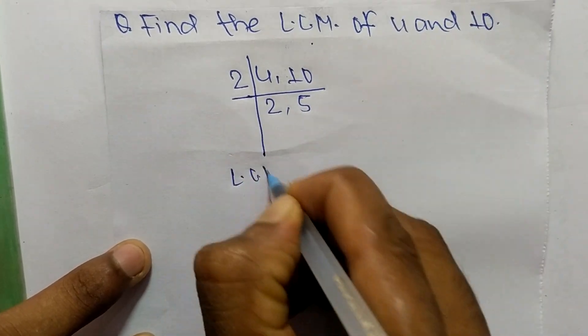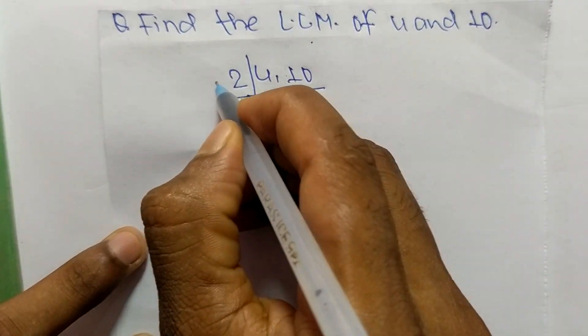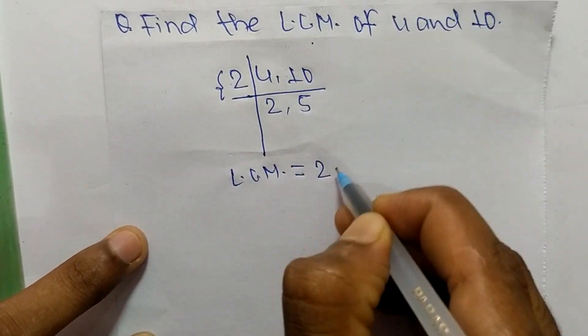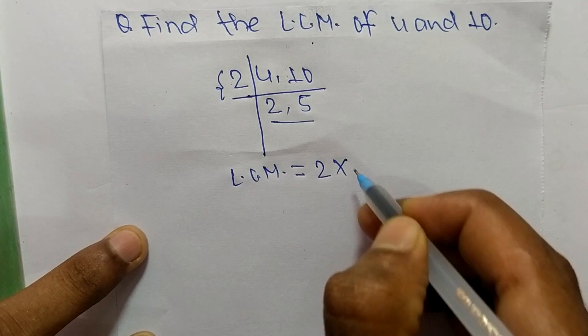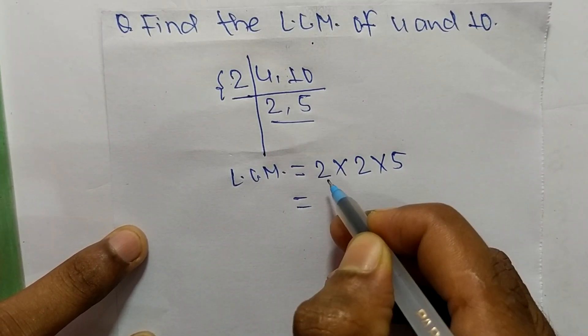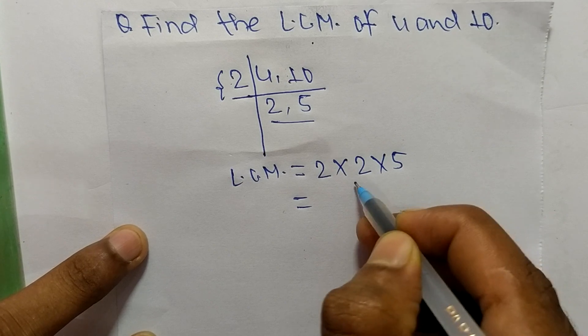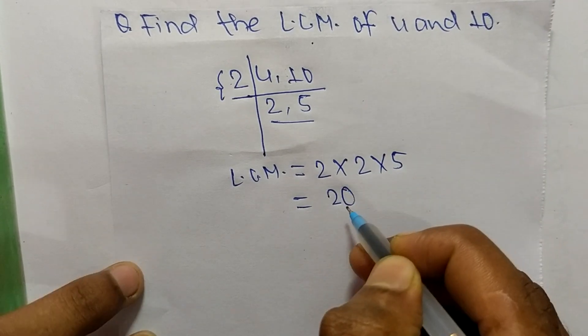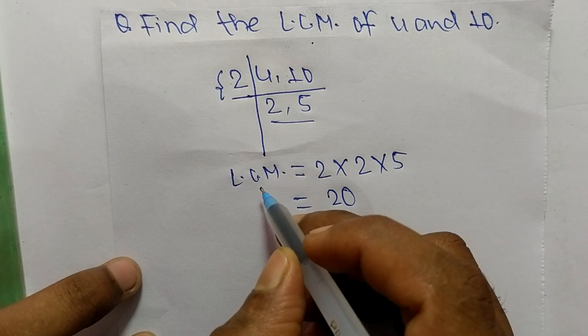Now we write LCM equals, from this part it is 2, and from here it is 2 times 5. So it is 2 times 2 means 4, and 4 times 5 means 20. So 20 is the LCM of 4 and 10.